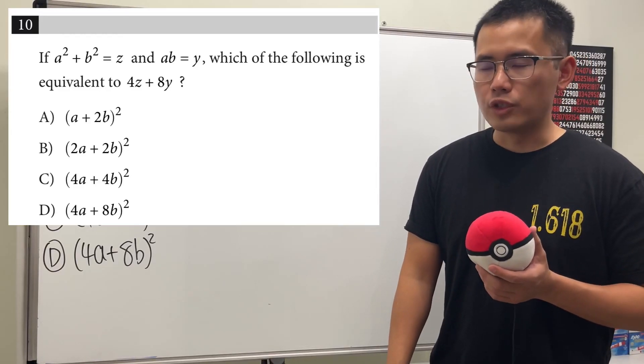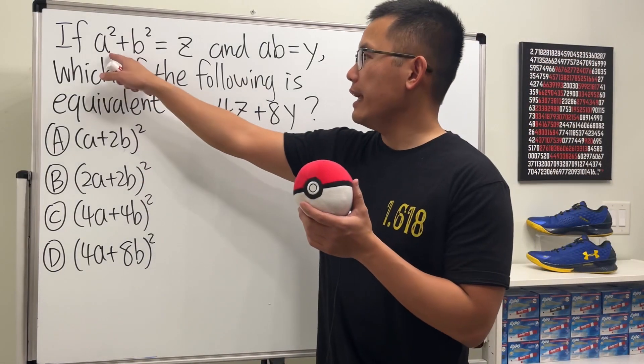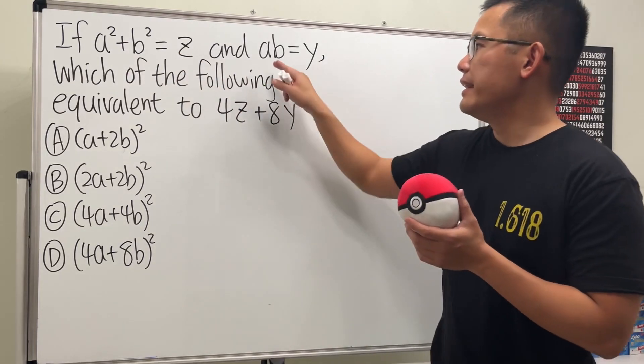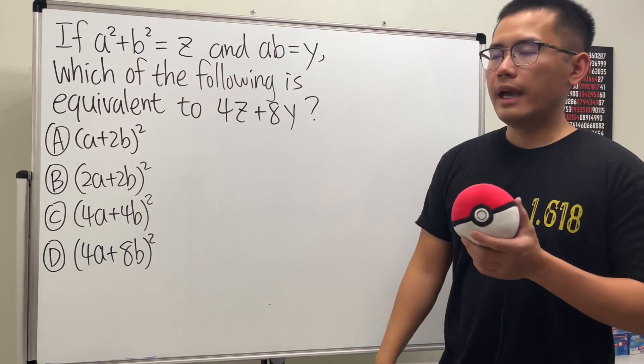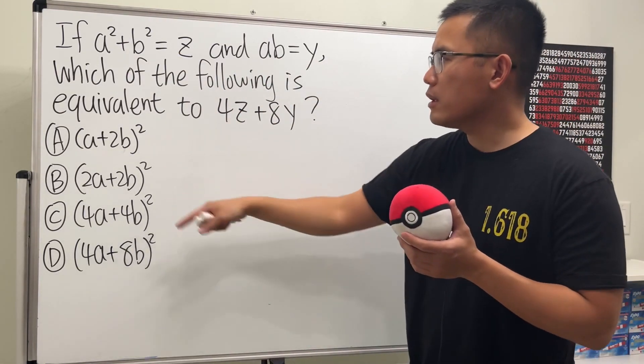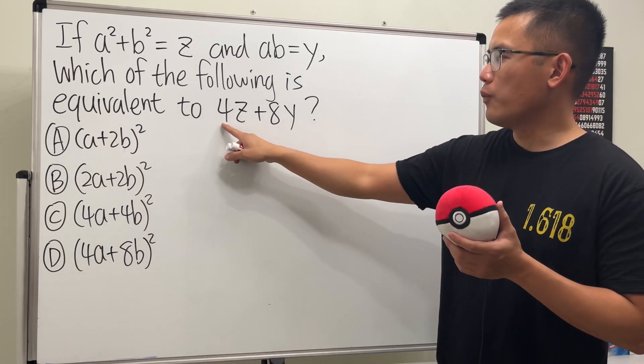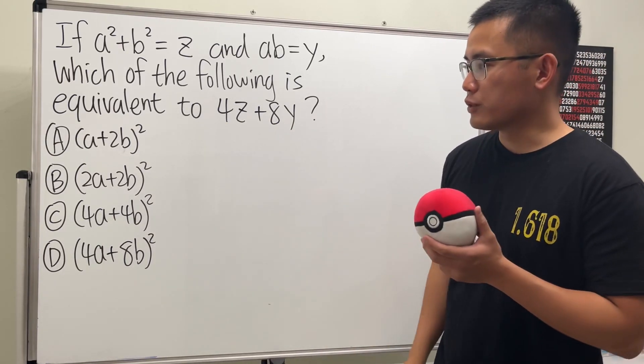Here we have a classic SAT algebra practice question. Have a look. We are given that a squared plus b squared is equal to z, and then ab is equal to y, and we are going to find out which of the following here is equal to 4z plus 8y. So go ahead and give it a try.